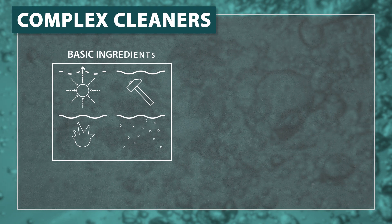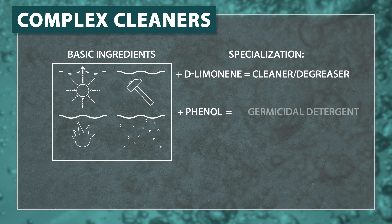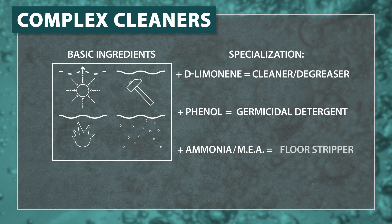These ingredients will make a good basic cleaner, but for specific tasks, a specialized formula is needed. To construct a degreaser, a solvent like limonene is added. To make a germicide, a phenol, a QUAT, or hydrogen peroxide is added. And to make a floor stripper, ammonia, amine, or solvent is added to the synthetic detergent.